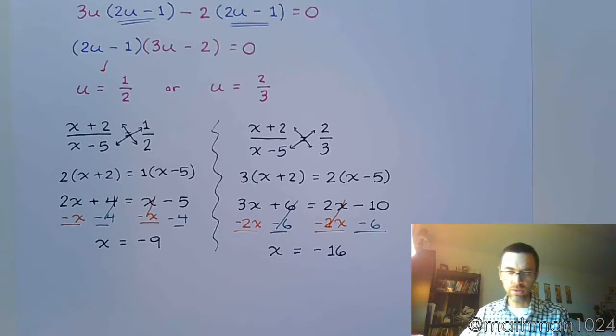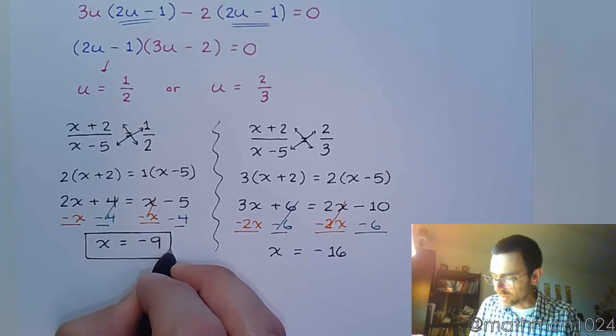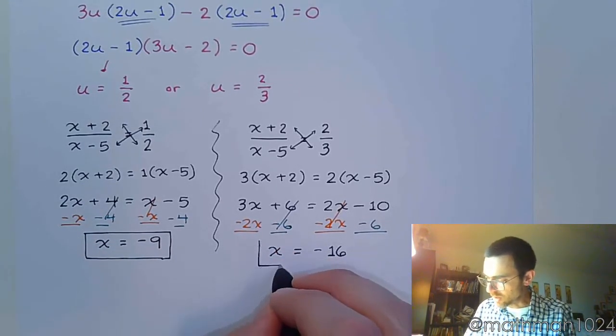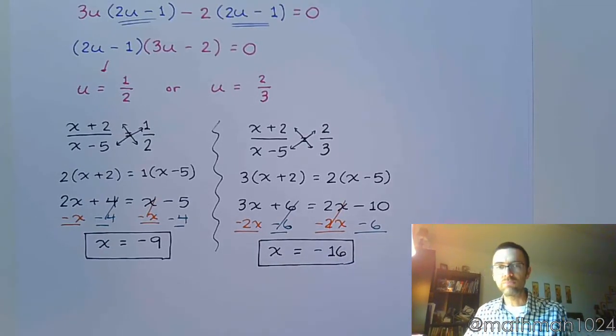So we look at our answers. And we see that neither one of these is 5. So as long as we've done our work correctly, these are our two solutions. Just like that.